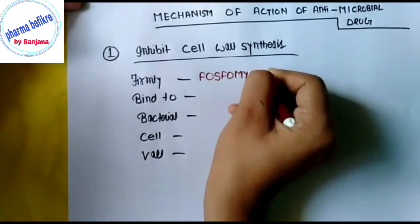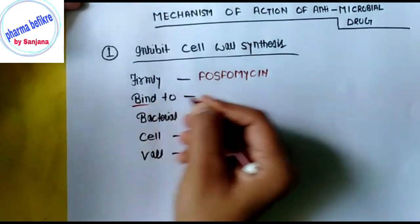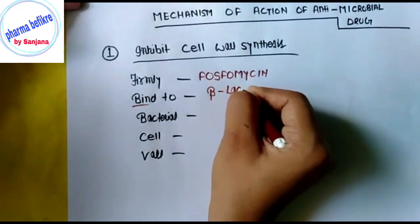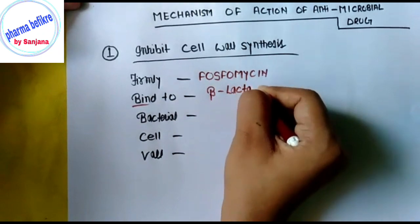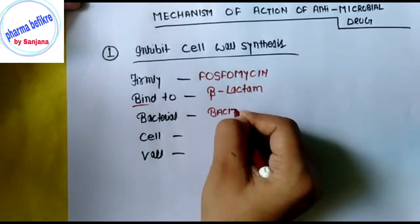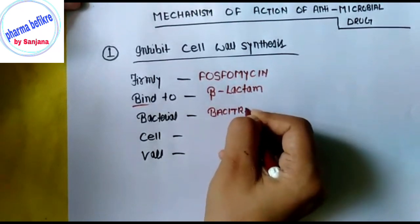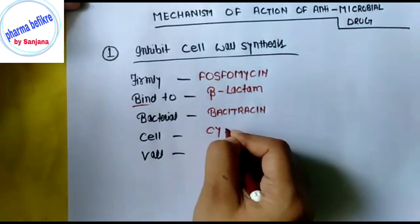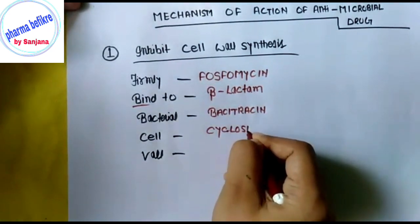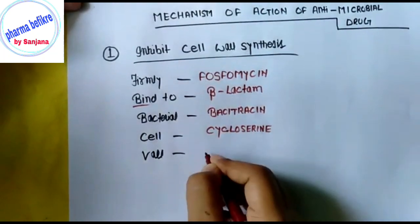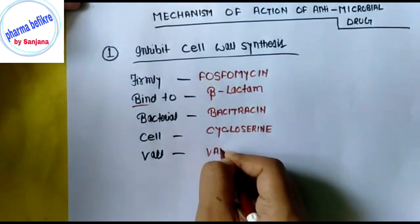From this mnemonic: F stands for Phosphomycin, B stands for Beta-lactam, C stands for Cycloserine, and V stands for Vancomycin. The second B also represents Bacitracin.